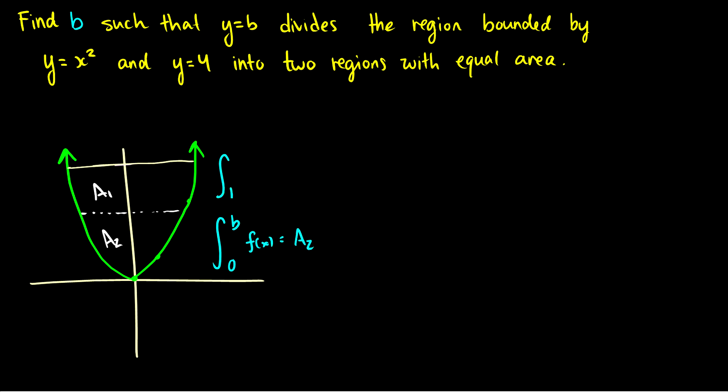And then the integral from b to 4, which would be this area a1 of g of x, is equal to a1 and it just happens that a1 is equal to a2. So we want to set these two integrals equal to each other.